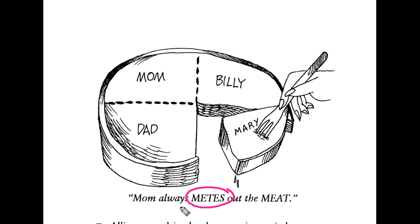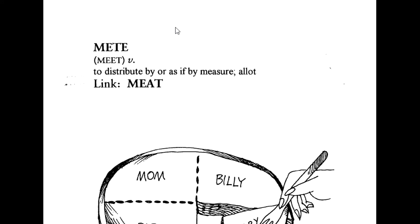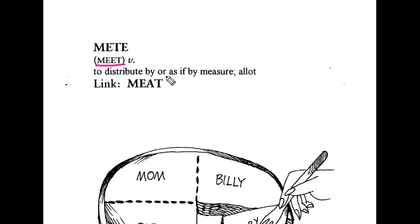Another word is mete. Mom always metes out meat. We will pronounce it as mete. The pronunciation of the word is mete, not mate. It is known as mete.